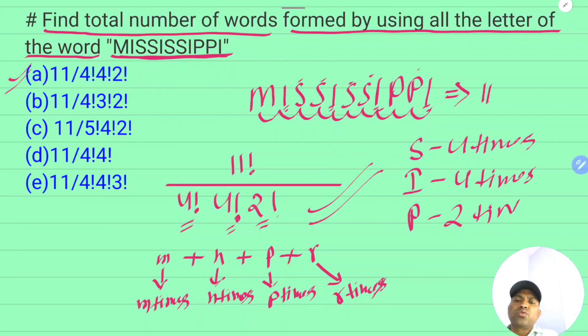The total letters would be M plus N plus P plus R. This is an alike object arrangement. The formula for total arrangements is: (M+N+P+R) factorial divided by M factorial times N factorial times P factorial times R factorial.